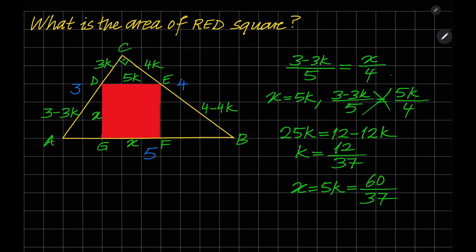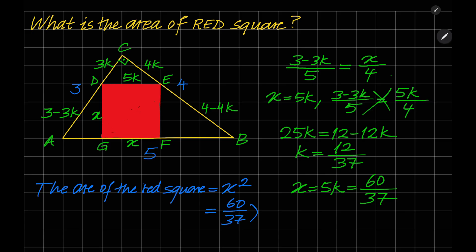Now we know that the area of the red square is equal to X squared, which equals (60 over 37) squared, which equals approximately 2.63 square units. That's the answer.